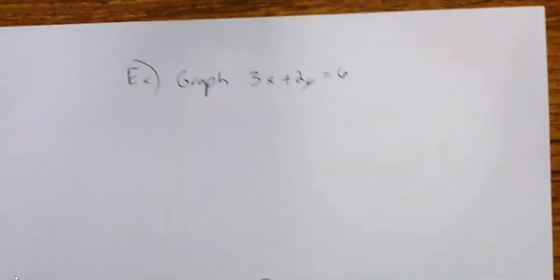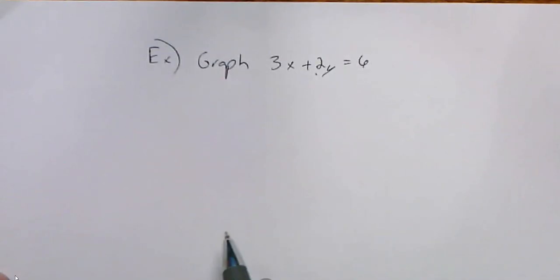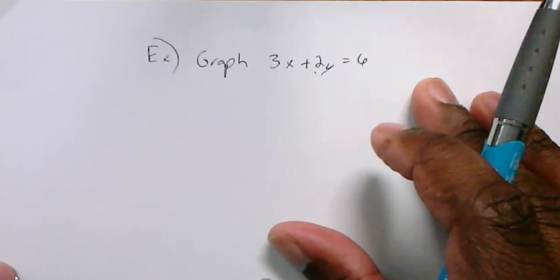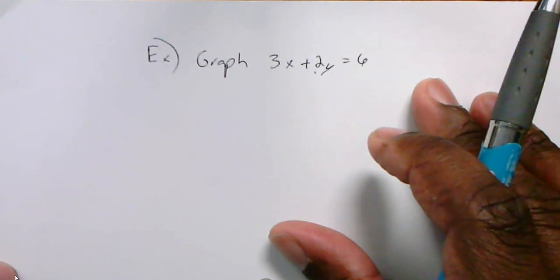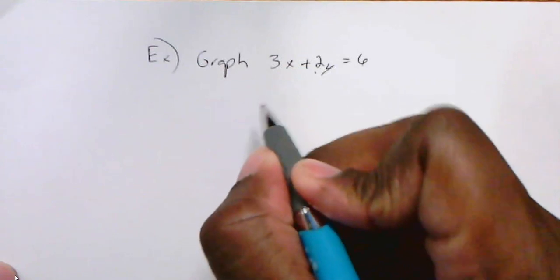Here, it's not in slope-intercept form. This is actually standard form because you have x and y on the same side. Because it's in standard form, not slope-intercept form, I would rewrite it so that it is by solving for the variable y. We're going to solve that equation for y.